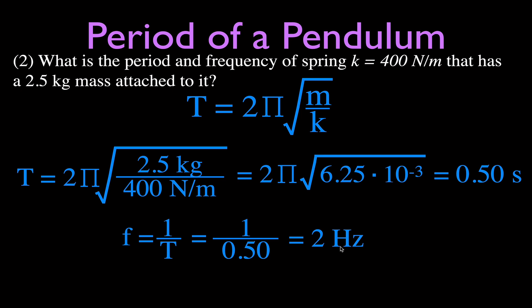We went through and used the PHET simulation to determine how mass, amplitude, acceleration due to gravity, and spring constant affect the period. It's only the mass and the spring constant that matter. Then we solved a simple problem using the equation.